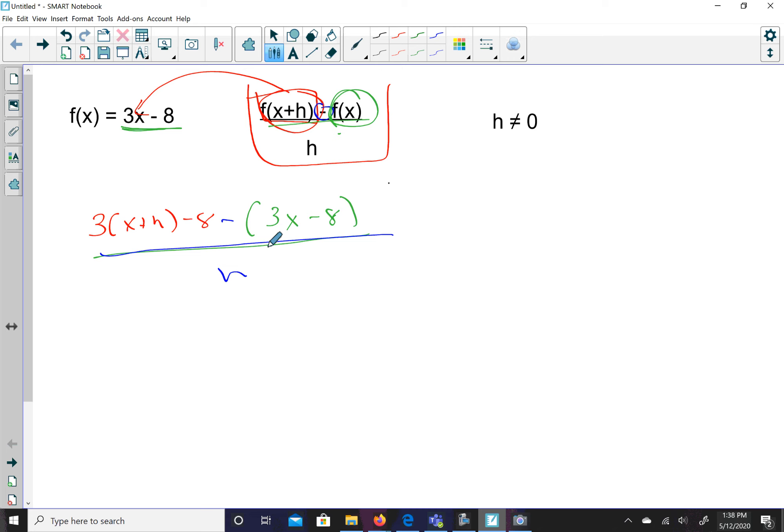And then I'm going to distribute my 3, and I'm going to have 3x plus 3h minus 8 minus 3x plus 8. And this is all over h.